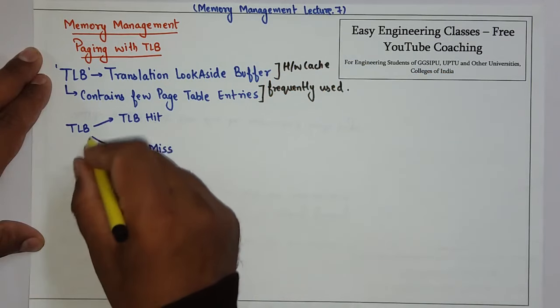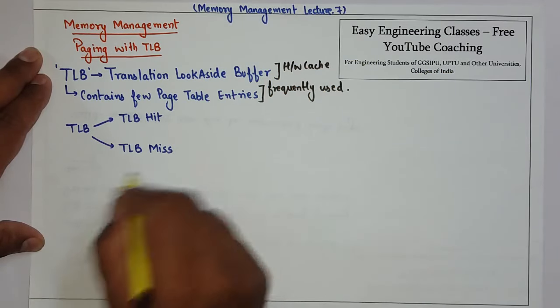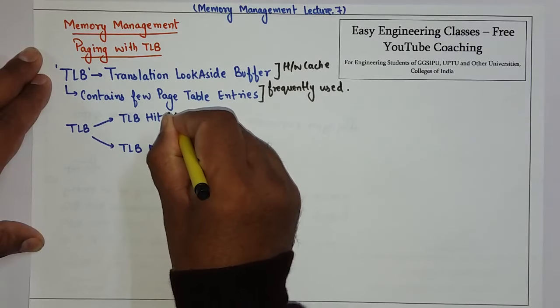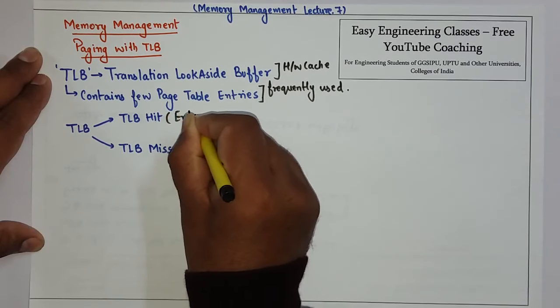Now there are two different terms: TLB hit and TLB miss. TLB hit means an entry is found in the cache memory.